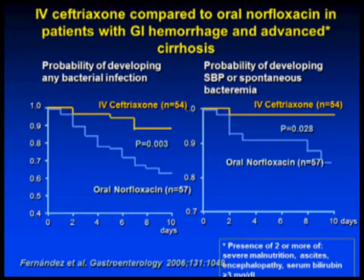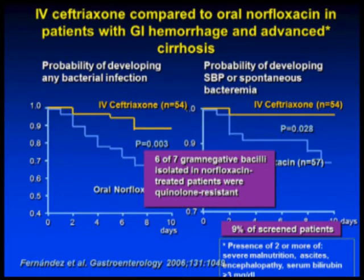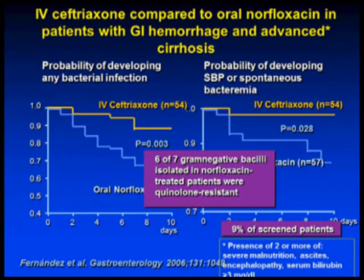Patients were randomized to IV ceftriaxone versus oral norfloxacin. For the probability of developing any bacterial infection, and specifically SBP or spontaneous bacteremia, IV ceftriaxone was much better. Looking at the paper more carefully, of seven gram-negative bacilli that explained this difference, six were due to quinolone-resistant organisms. This study was done in Spain where norfloxacin prophylaxis was used extensively. The ascites club still recommends oral norfloxacin, except in very sick patients, or in settings with a lot of quinolone-resistant organisms.